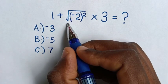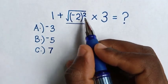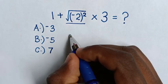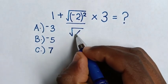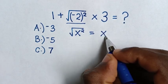So, from here, square root of negative 2 bracket square is in the form of square root of x square, which is equal to x absolute.